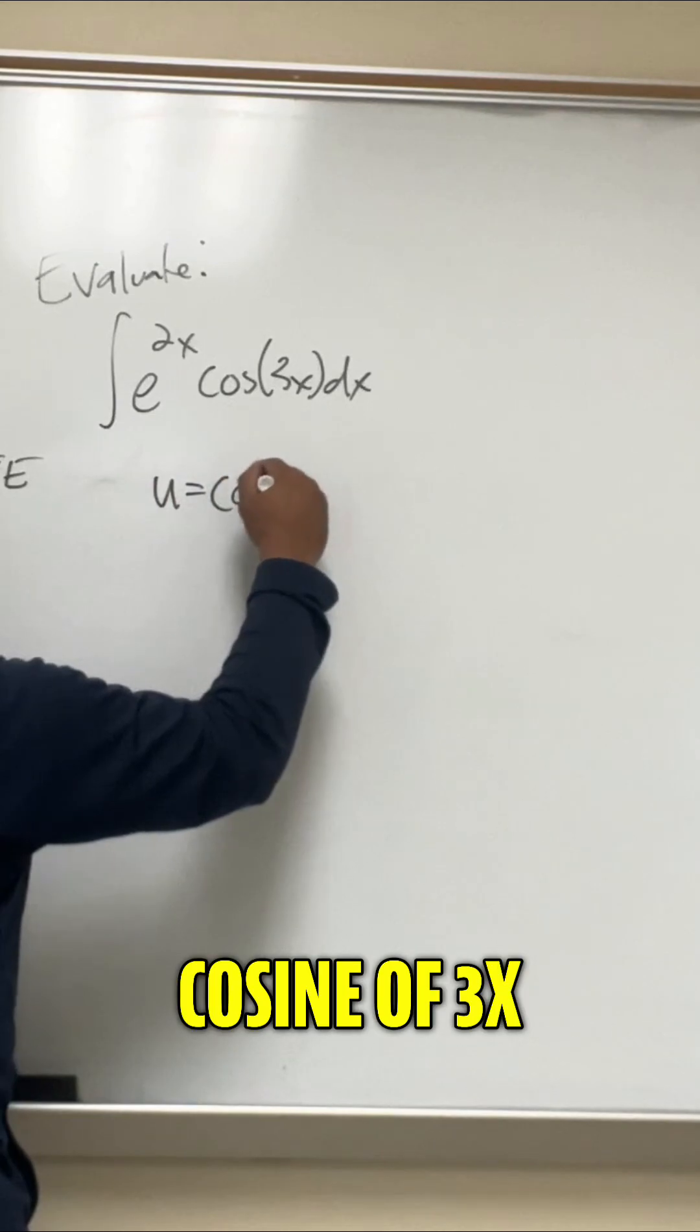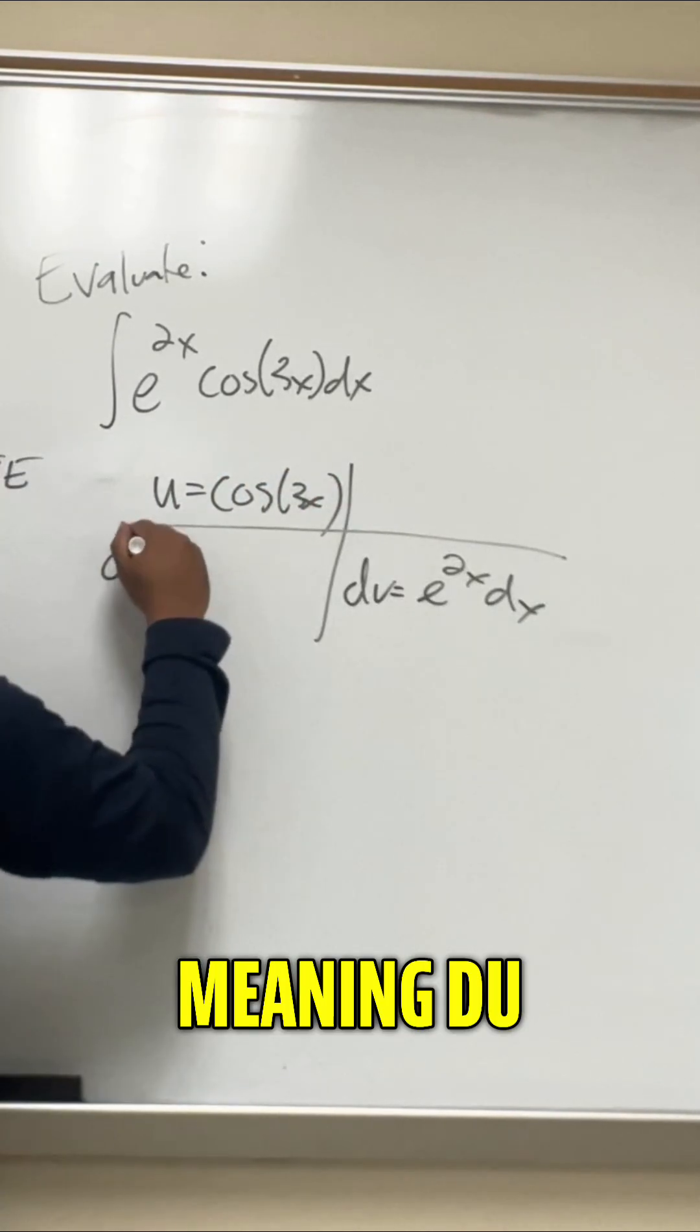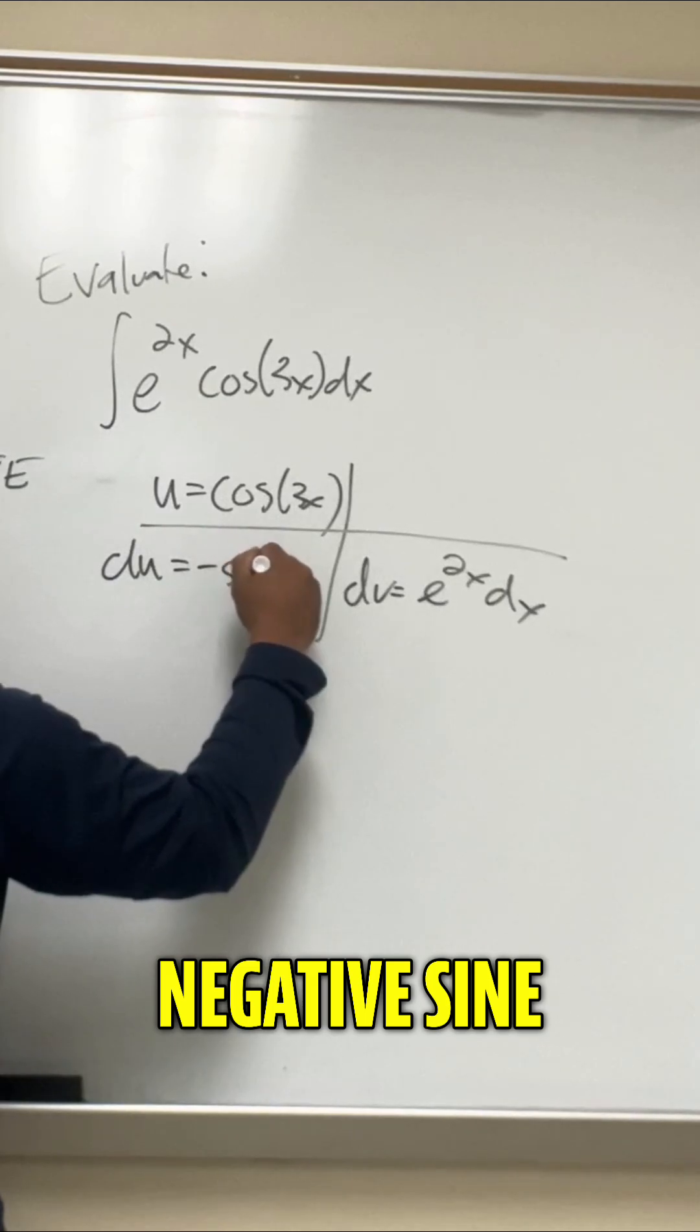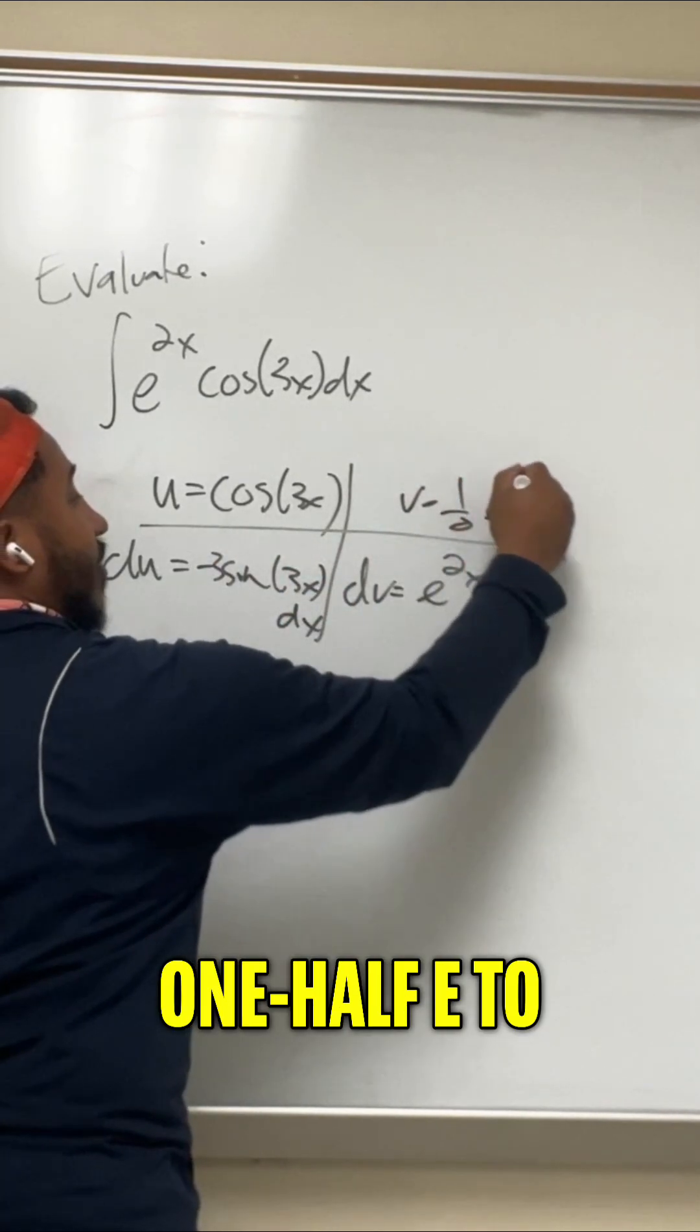So we have to let u equal cosine of 3x and let dv be the rest. Meaning du would be negative sine of 3x times 3 dx. And v would equal 1 half e to the 2x.